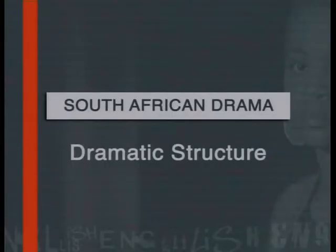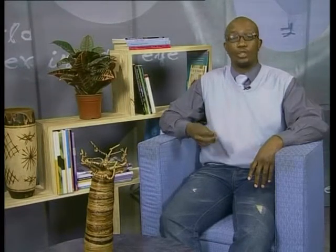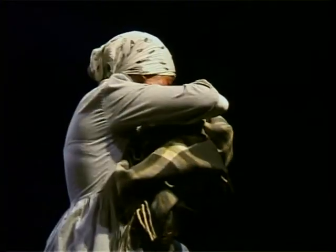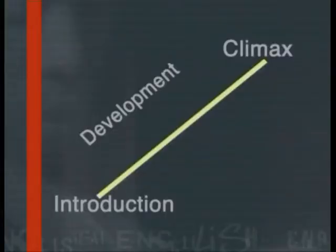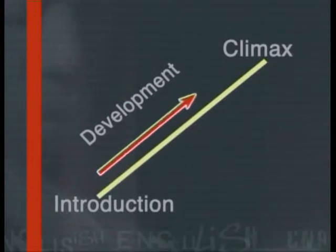Lesson six explores dramatic structure. In this lesson, we define dramatic structure and use the play The Suitcase to explain how dramatic structure works in terms of introduction, development, climax and denouement. After you have shown this lesson to your learners, get them to work out how the plots in their set novel and play are structured, as this will help to reinforce this terminology.